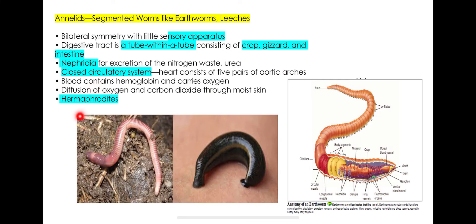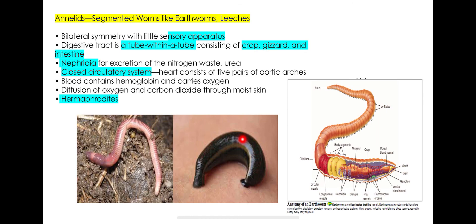Annelids are hermaphrodites, meaning one individual has both male and female reproductive structures. They also obtain oxygen and release carbon dioxide through diffusion across their moist skin — that's why their skin is always moist. Examples of Annelida include earthworms and leeches.